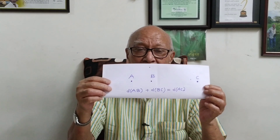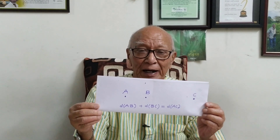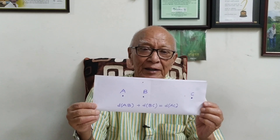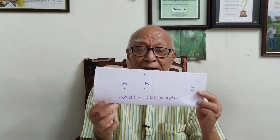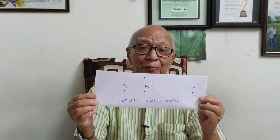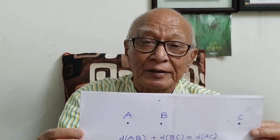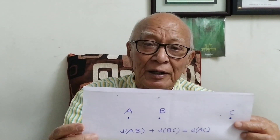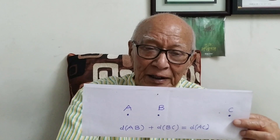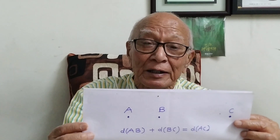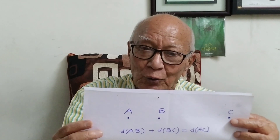If you consider point A, point B and point C and measure the distance between A and B, B and C, and A and C — if distance AB plus distance BC equals distance AC, then the points are said to be collinear. Suppose AB is 5 cm, BC is 6 cm, then distance AC must be 5 plus 6, that is 11 cm.